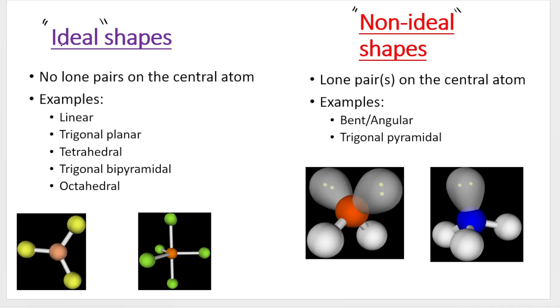The ideal molecular shapes have no lone pairs on the central atom and these are the five that we described. Here's a few of them pictured. The important thing is look at the central atom - in this case this one and this one - there's no lone pairs.